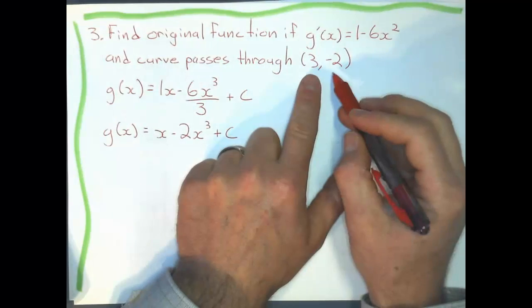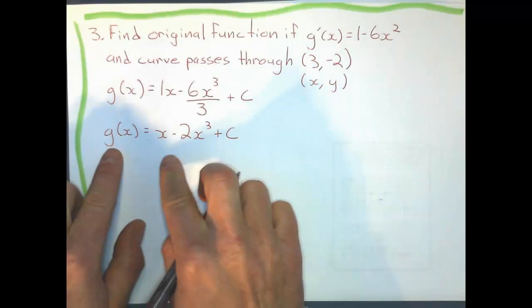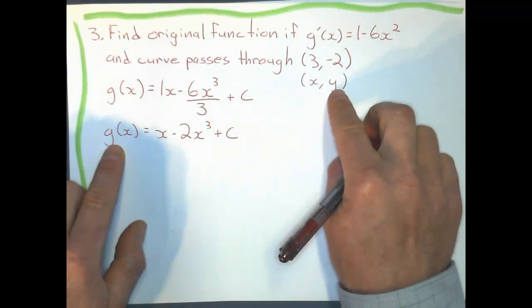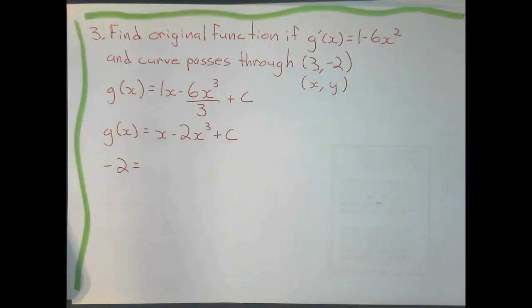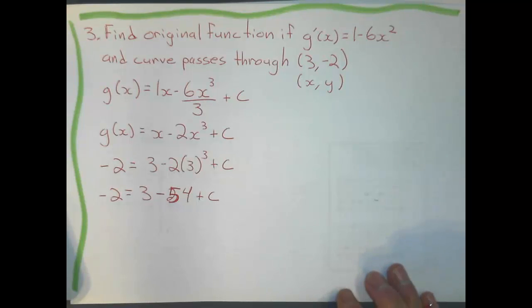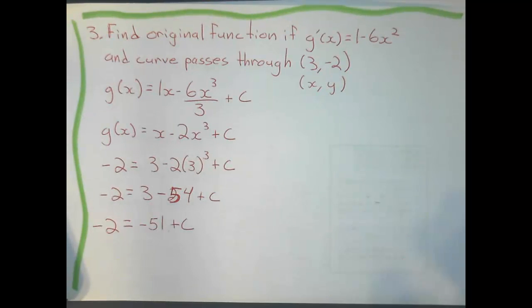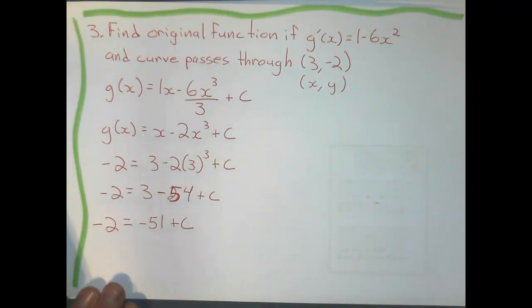Then I'll substitute. These guys - remember these are x and that's y. Put those in. g(x) is negative 2. And so my constant of integration - add 51 to the other side - I should get 49.